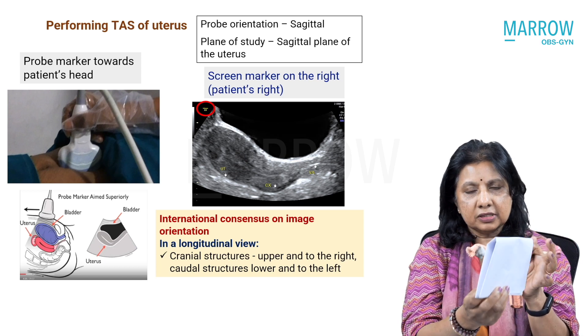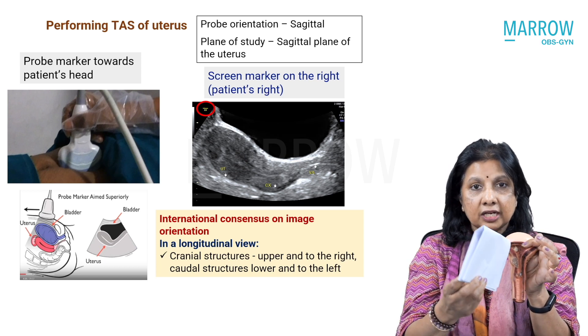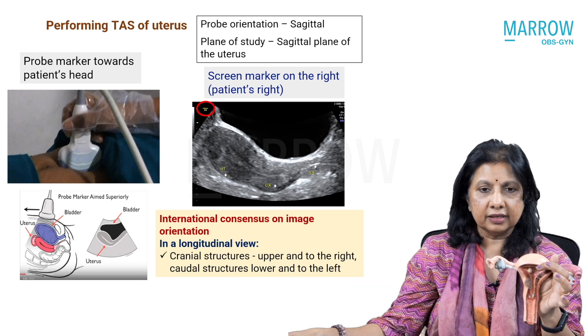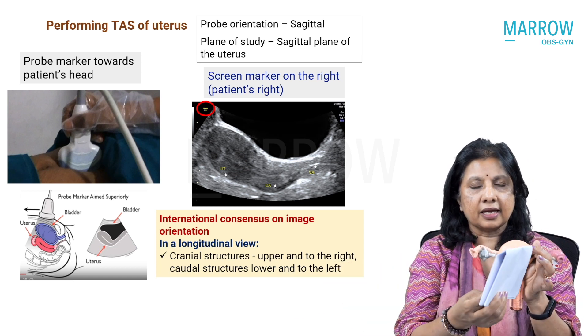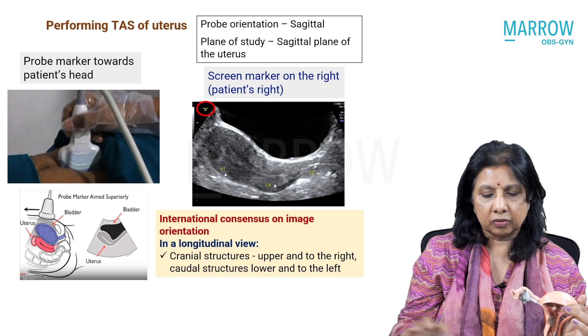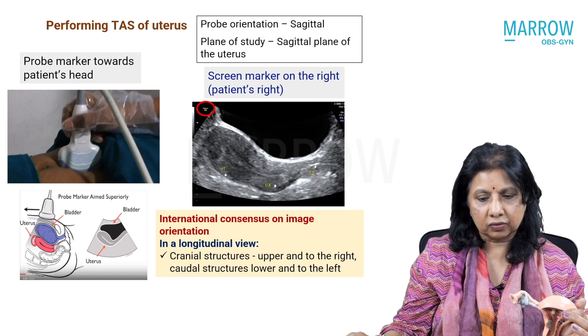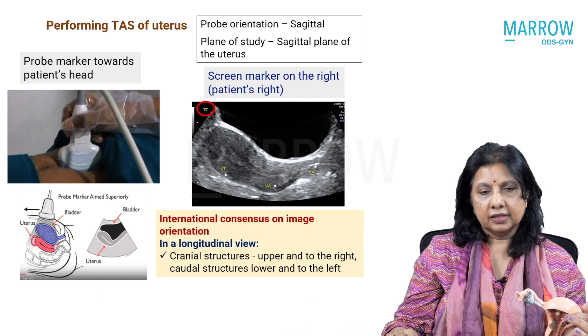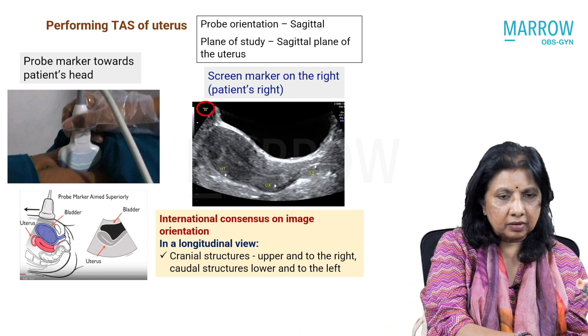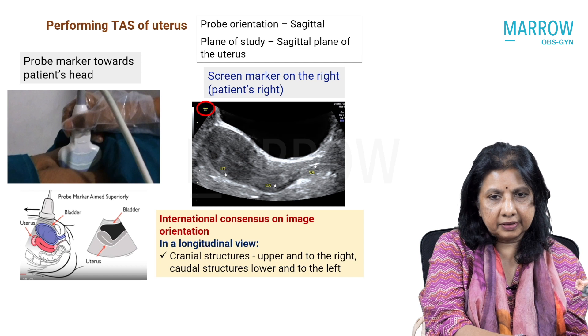So because it takes sagittal planes only, we see this anterior and posterior orientation of the uterus. So let's see the same thing on a clip.